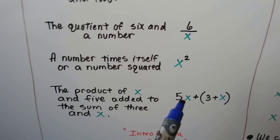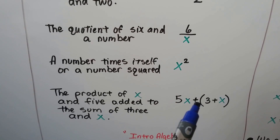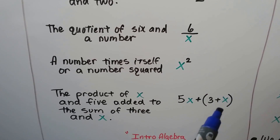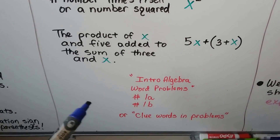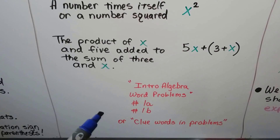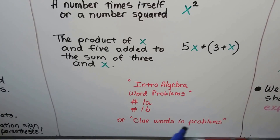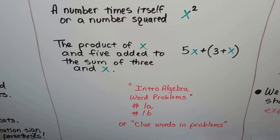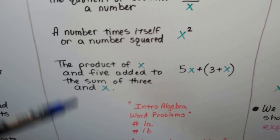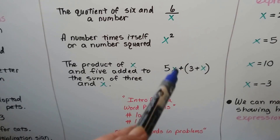The product of x and 5 would be 5x, added to the sum of 3 and x — and we can separate this with parentheses. I'm going to have a link to my Intro Algebra Word Problems videos, 1A and 1B, that talk about clue words and deciphering how to make these into expressions or equations. I also have a video called Clue Words in Problems — it covers that product is multiplication, quotient is division, and how to write subtraction and division problems.